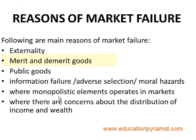Merit and demerit goods are also a cause of market failure. Merit goods are goods and services provided to society by the state, and people take advantage of these goods without knowing how important they are — for example, education services and hospitals. Demerit goods are those which are harmful for people, but people don't stop using them because they don't know how harmful they are — for example, smoking.